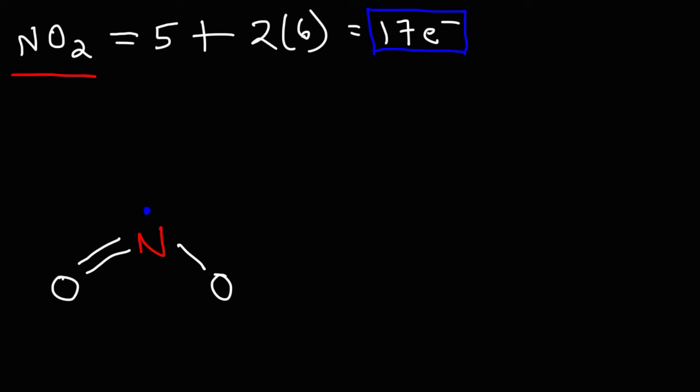Now, oxygen wants to have eight electrons around it. This oxygen has two bonds, or four electrons so far. So we need to add two lone pairs to get to eight. This oxygen has one bond, or two electrons around it. So it needs three lone pairs to get to eight electrons.